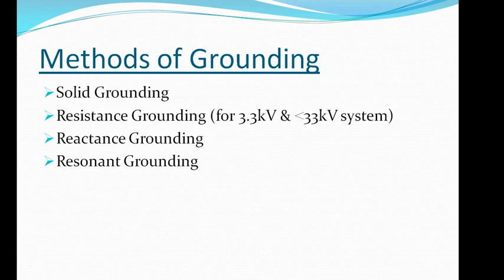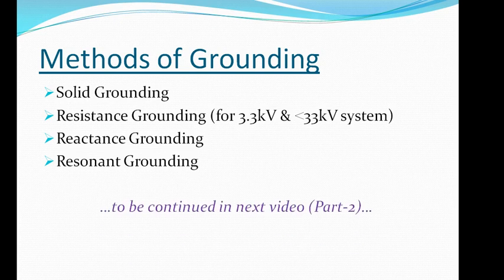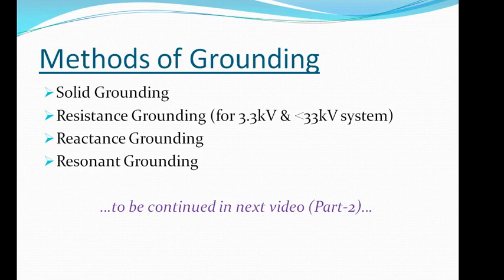Resistance grounding is used between 3.3 kV and 33 kV systems and is used for less capacitive circuits. Reactance grounding is used for circuits where high charging currents are involved, such as power transformer lines and underground cables; this type provides additional reactance which neutralizes capacitive currents. Finally, resonant grounding uses an arc suppression coil called a Petersen coil, which controls the earth fault current to ground.